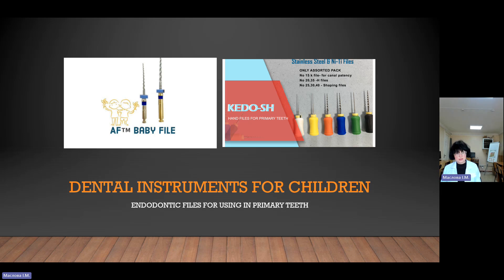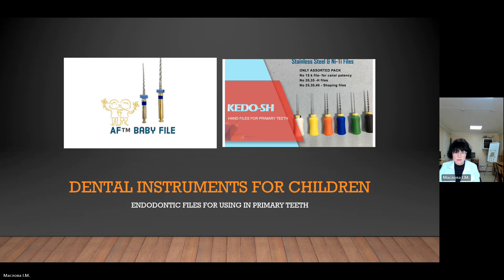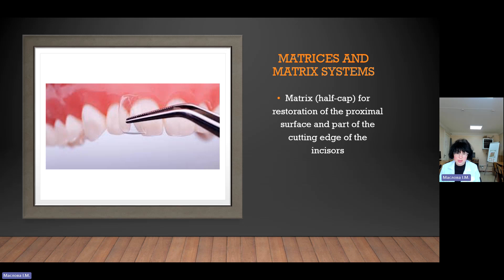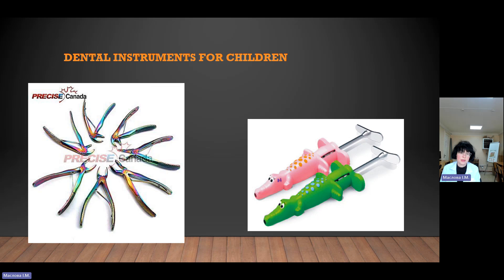Pediatric dentists can use special instruments including endodontic instruments, baby files, and matrix systems — specifically matrix half-cups for restoration of the proximal surface and cutting edge of primary incisors. Other specialized instruments include pediatric extraction forceps and dental syringes for local anesthesia, often available in rainbow colors to be more child-friendly.